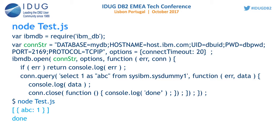When we call ibm_db.open, it connects to the target database server and returns a connection object to the callback function. Using that connection object, we can run a query and get the result in data. Writing code or developing applications in Node.js is very easy — in very few lines you can write code to do much larger tasks.